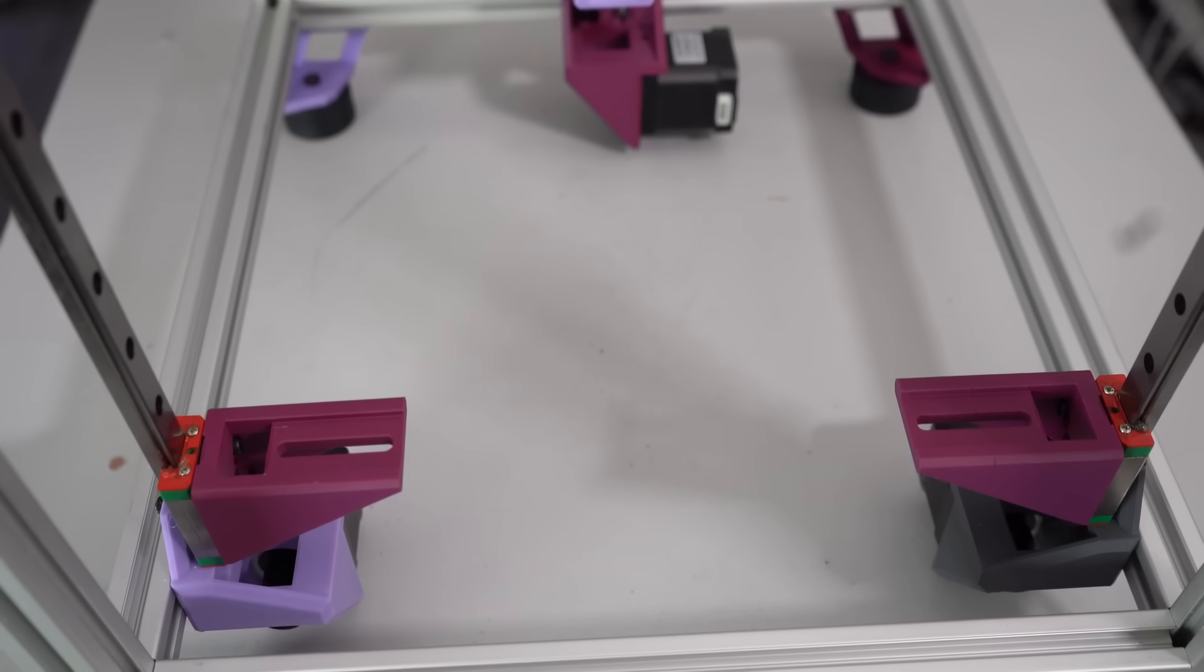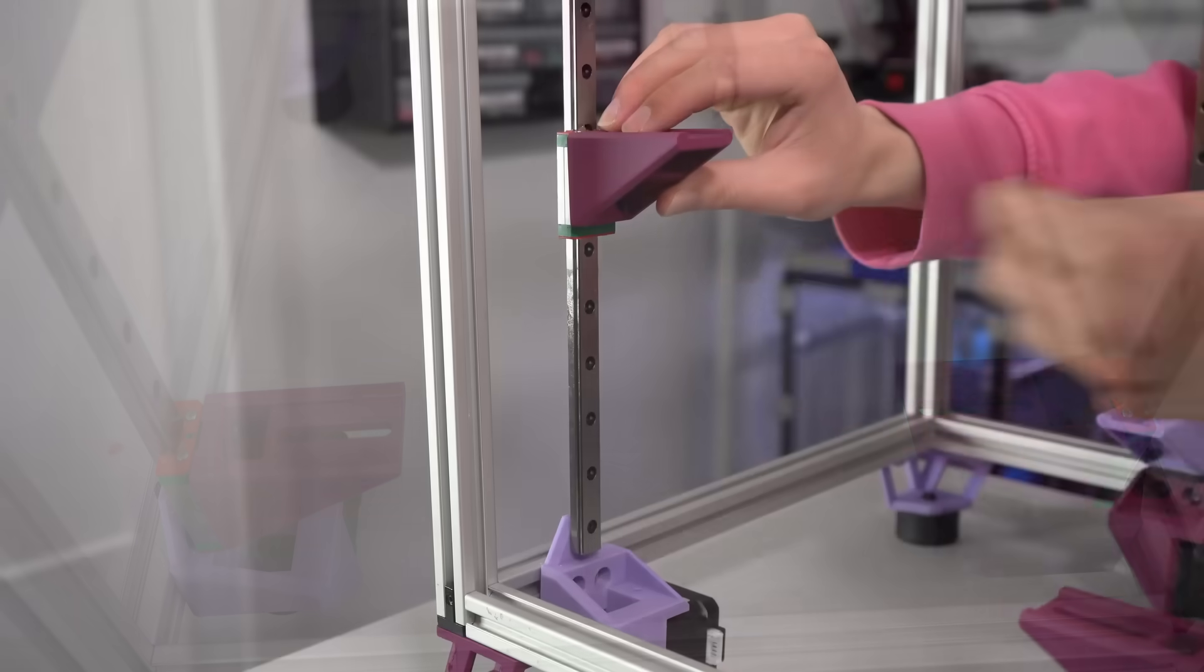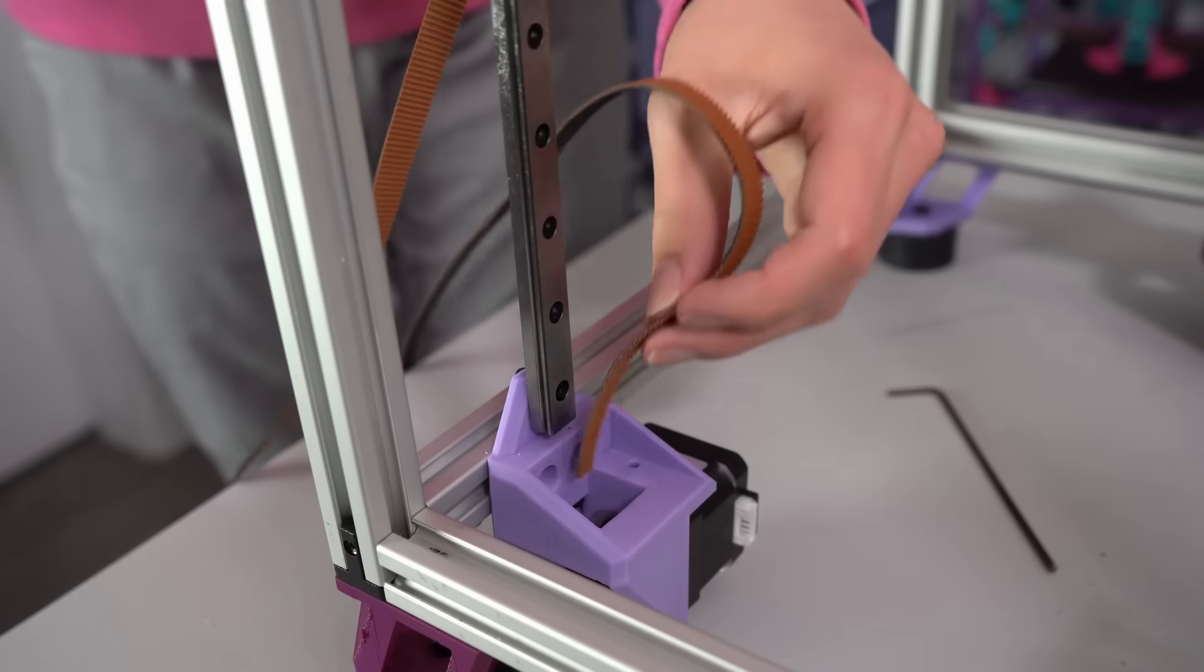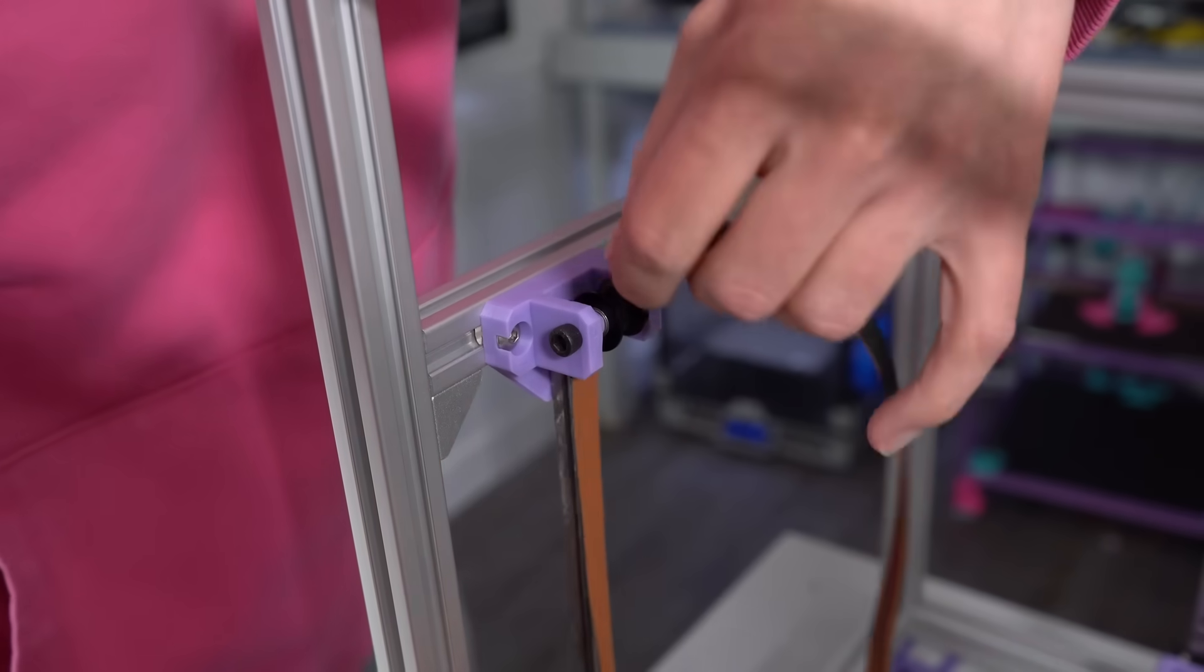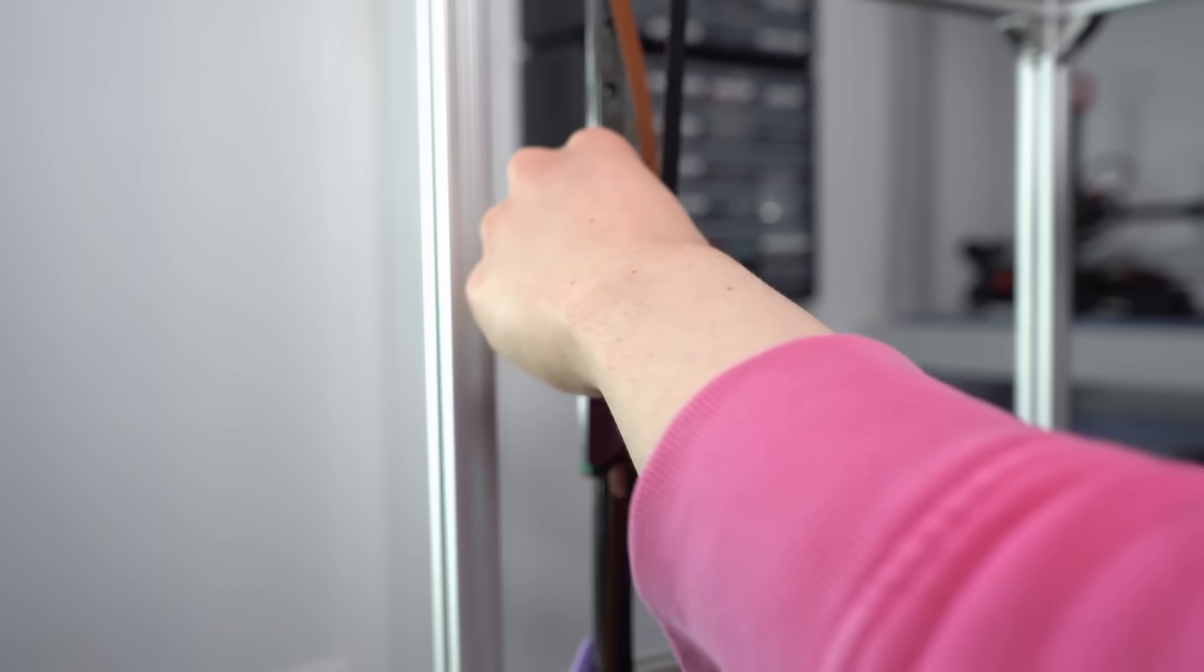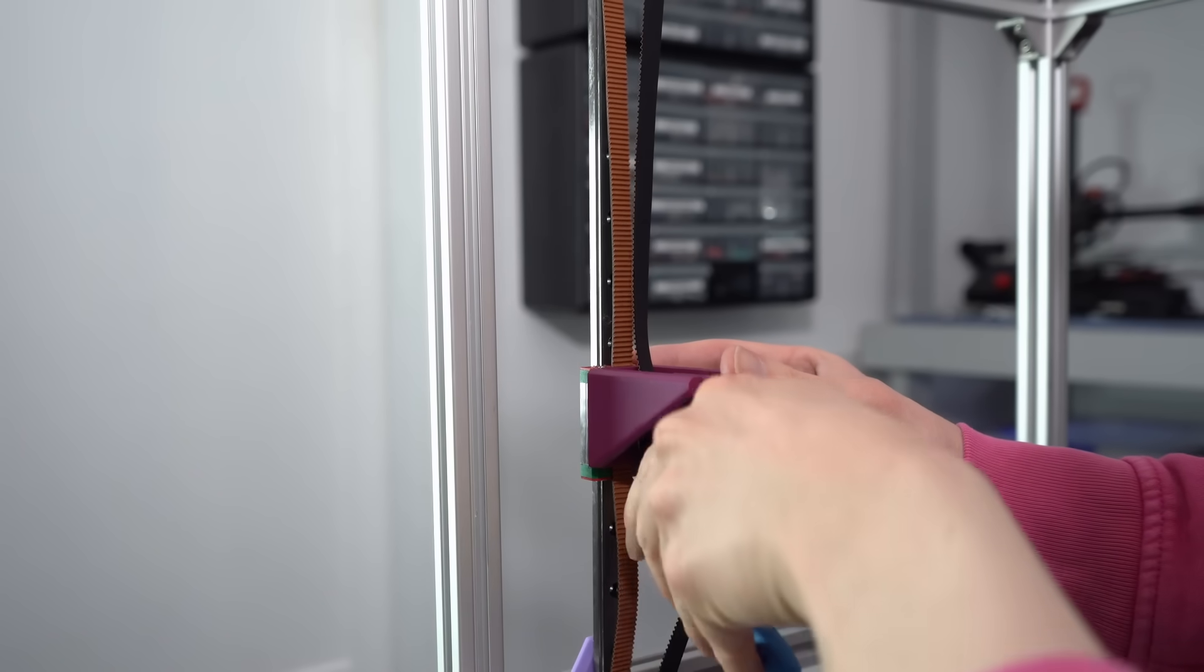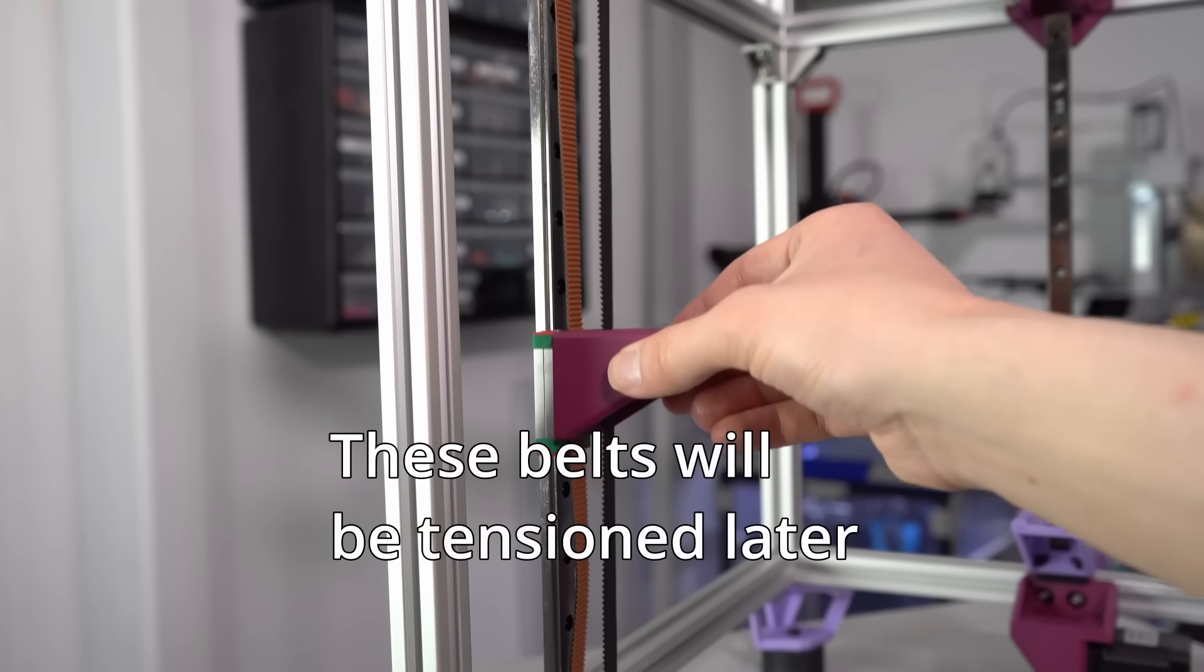In my opinion, routing the Z belts is the trickiest part of the entire build, but as long as you take your time, it's really not too bad. First, pull some of the 9mm belt through the bottom slots on the bed mount, and then tighten the bottom two screws to lock it in place. Then route that belt down, around the motor pulley, and then up and around the idler at the top. From there, you can slide the belt through the top slot in the bed mount, pull it tight, and then tighten the top two screws to secure it. You can now cut off some of the excess belt, but make sure to leave enough that you can comfortably route this belt a second time. And here you can see what the finished belt loop should look like.